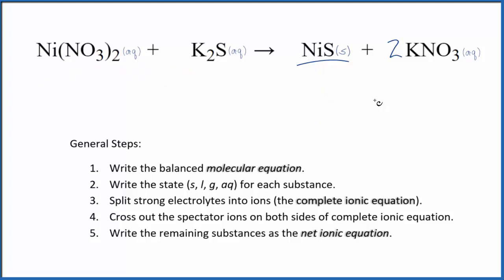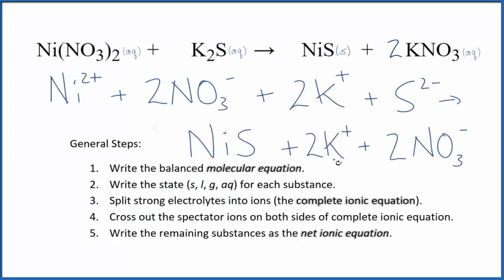Now we have our states, we can actually split the strong electrolytes apart into their ions. That looks like this. This is our complete ionic equation, and note we don't split solids apart when we do our net ionic equations or complete ionic equations. So solids stay together.